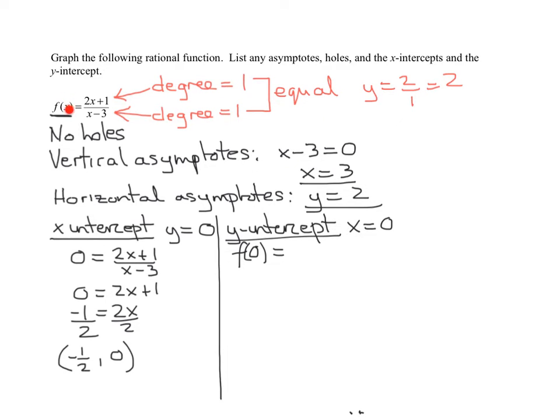Wherever you see an x up here, what are you going to put? A 0. So you're going to have 2 times 0 plus 1 over 0 minus 3. So that is negative 1 third. So as an ordered pair, that's 0, negative 1 third.